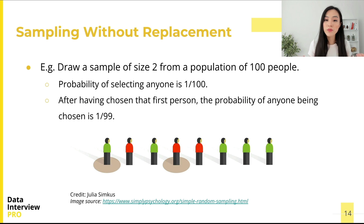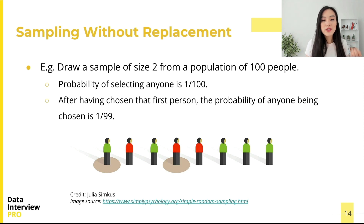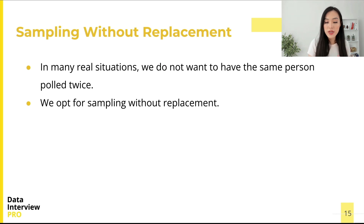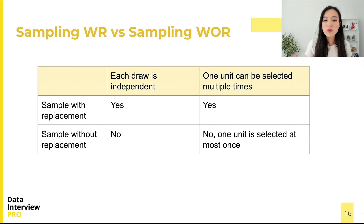For instance, if you wish to draw a sample of size 2 from a population of 100 people, then the probability of any one person being selected is 1/100. However, after having selected the very first person, the probability of any one of the remaining people being chosen is now 1/99. In many real situations, for example in conducting surveys, we do not want to have the same person pulled twice, so we would sample without replacement, in which case we will survey a different person each time and the same person will not be surveyed twice.